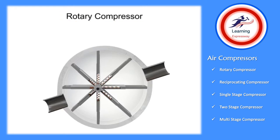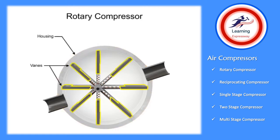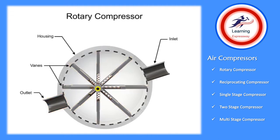Rotary compressors typically consist of a cylindrical housing with adjustable rotary vanes, an inlet, and an outlet. The vanes are on an off-center drive shaft.